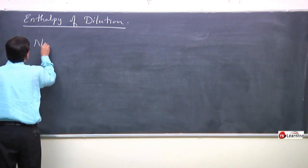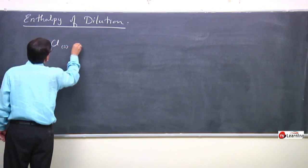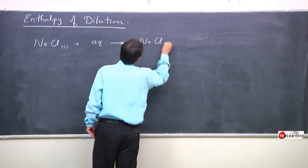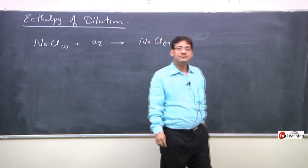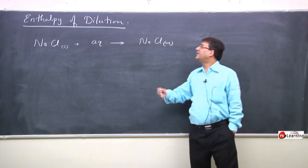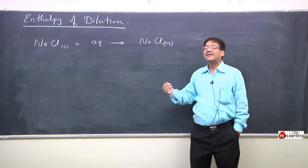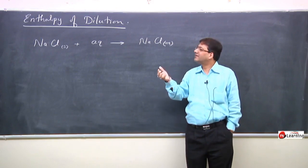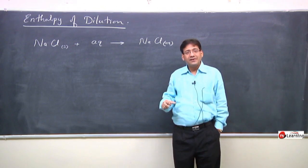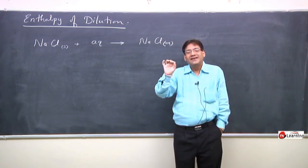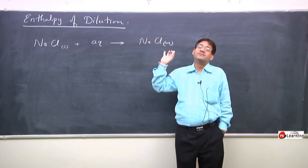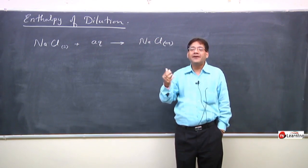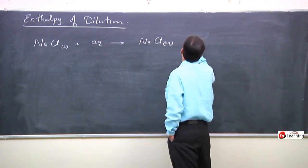For example, one mole of NaCl plus infinite water gives aqueous NaCl — this is the dilution phenomenon of NaCl. One mole of NaCl means 58.5 grams of NaCl, which is common salt found in every household kitchen. Take 58.5 grams of NaCl and add it to a large amount of water. Whatever heat is absorbed or liberated during that phenomenon would be called the enthalpy of dilution of NaCl.